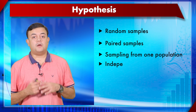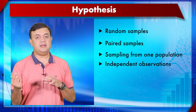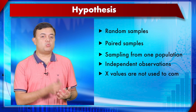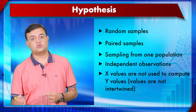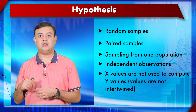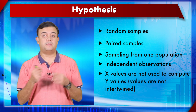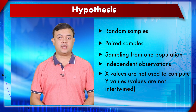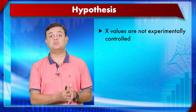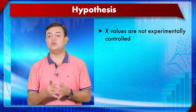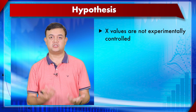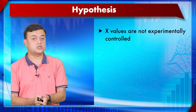Fourth: observations must be independent — for example, twins would not be appropriate. Fifth: x values are not used to compute y values — they should not be intertwined. If you calculate y from x via transformation or percentage conversion, you cannot use Pearson's. Sixth: x values are not experimentally controlled. In correlation, both values are simply measured; if x is controlled, the appropriate test is regression, not correlation.